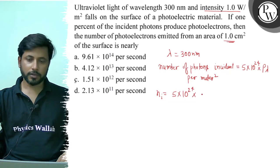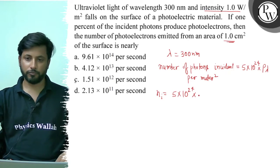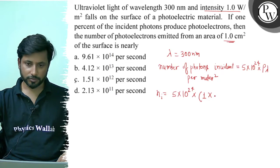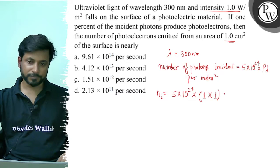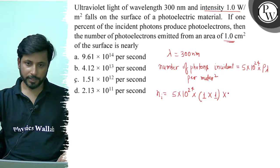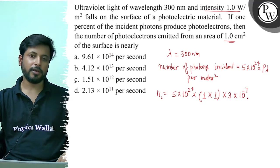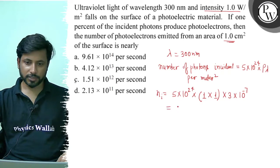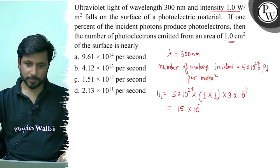Number of photons formula: intensity multiplied by area, here area is 1 meter square, so 1 into 1, then multiplied by lambda ki value — 300 nanometer = 3×10^-7 — divided by hc where hc = 6.626×10^-34 × 3×10^8. This gives us 15×10^17 photons per meter square per second.